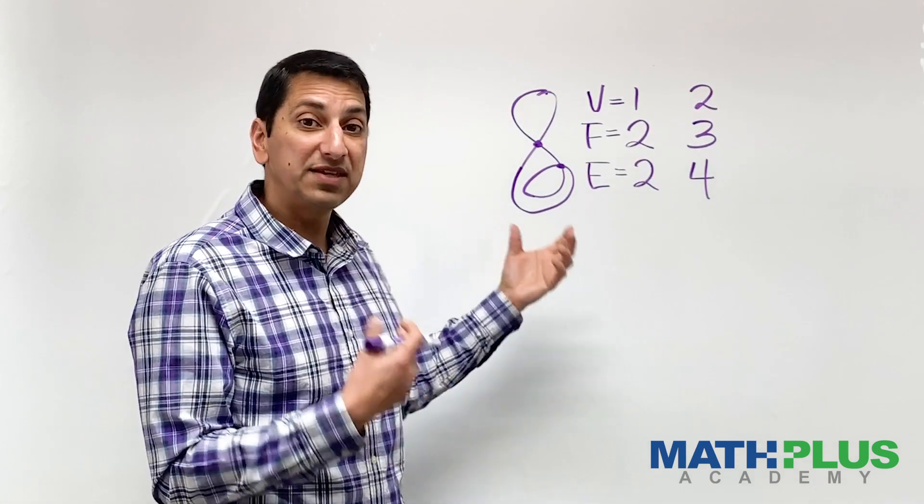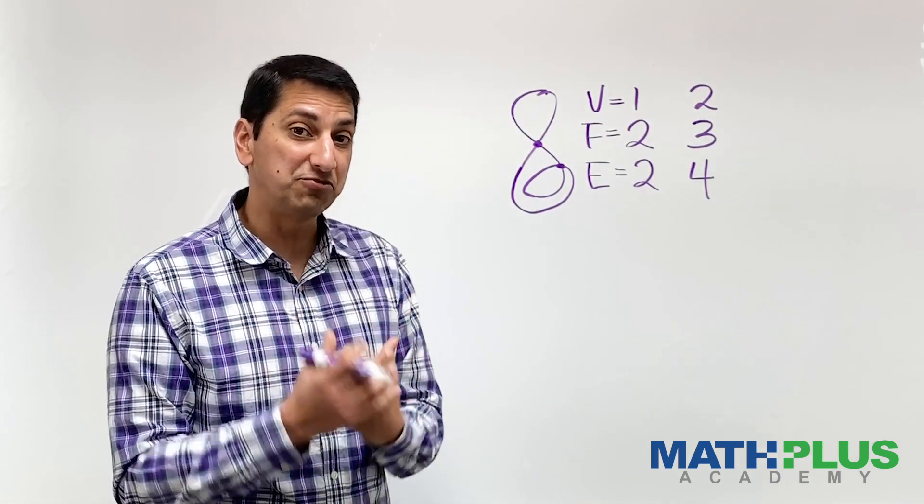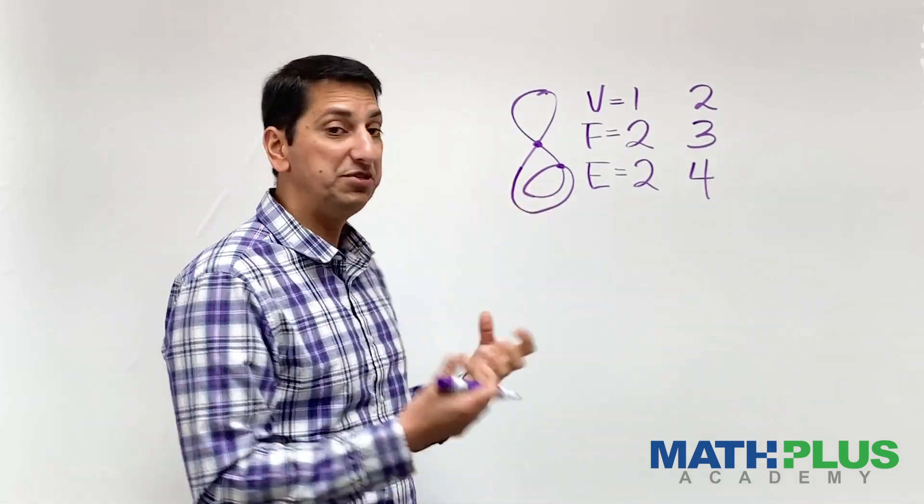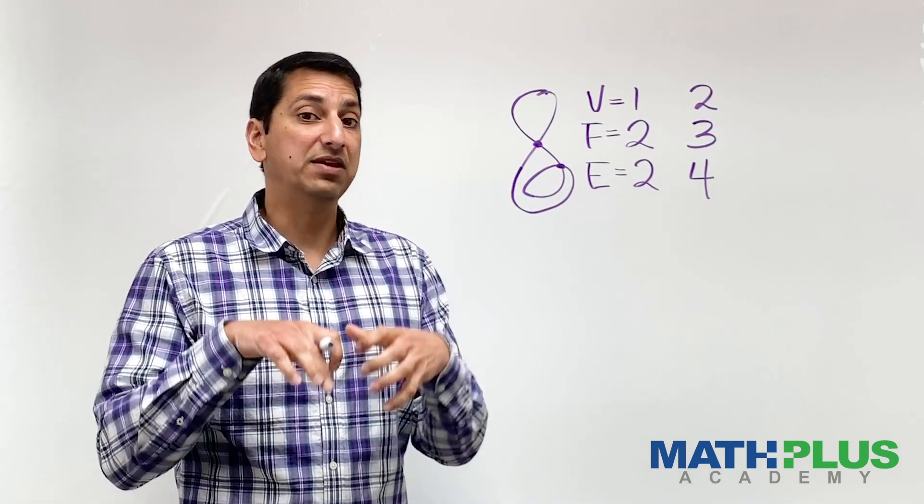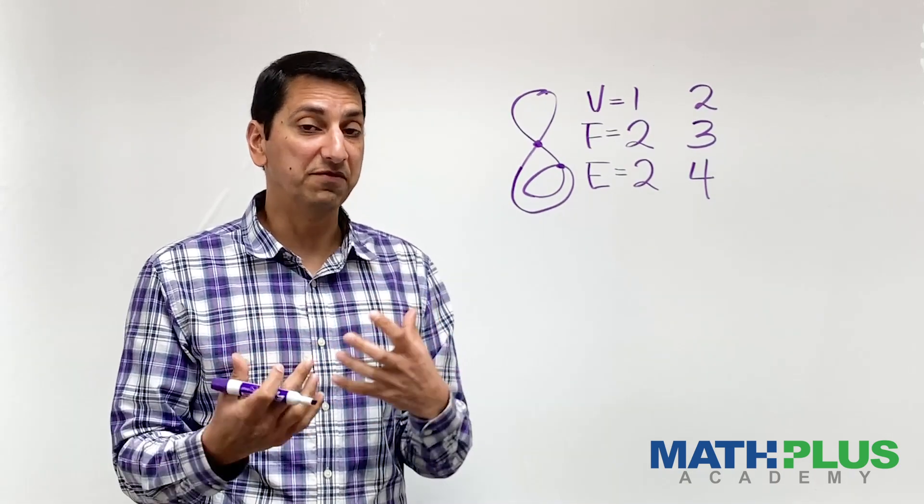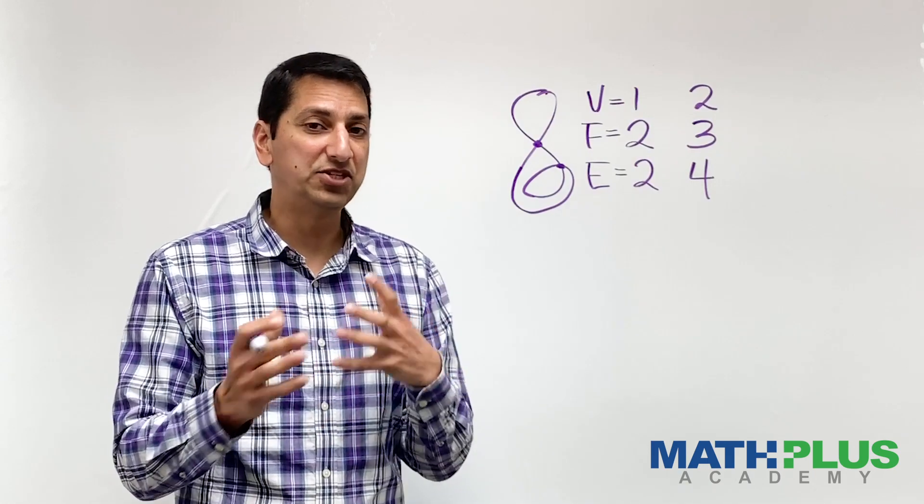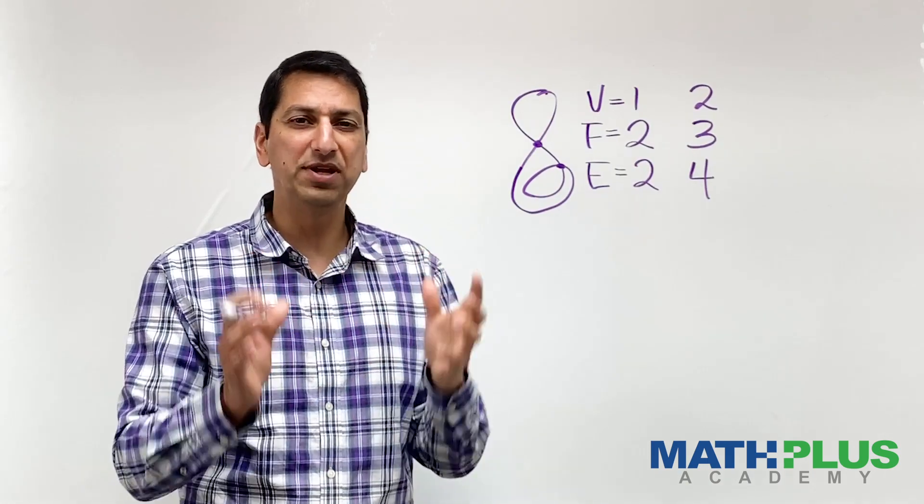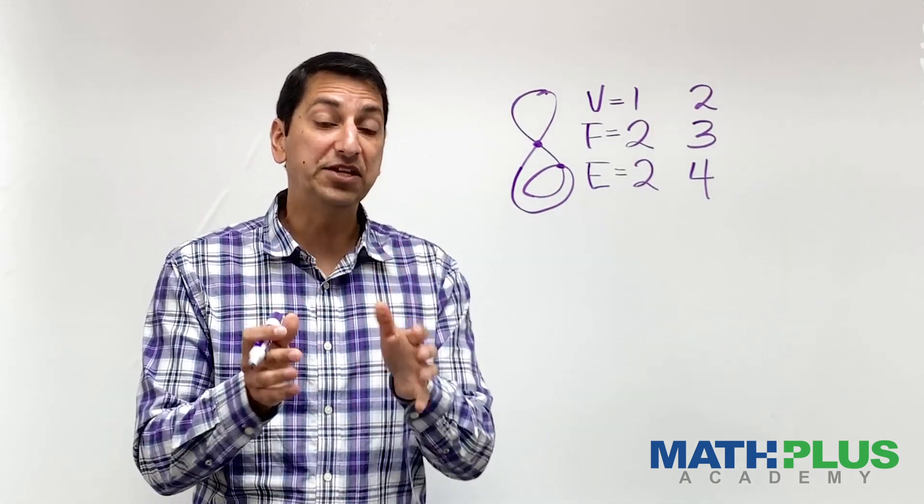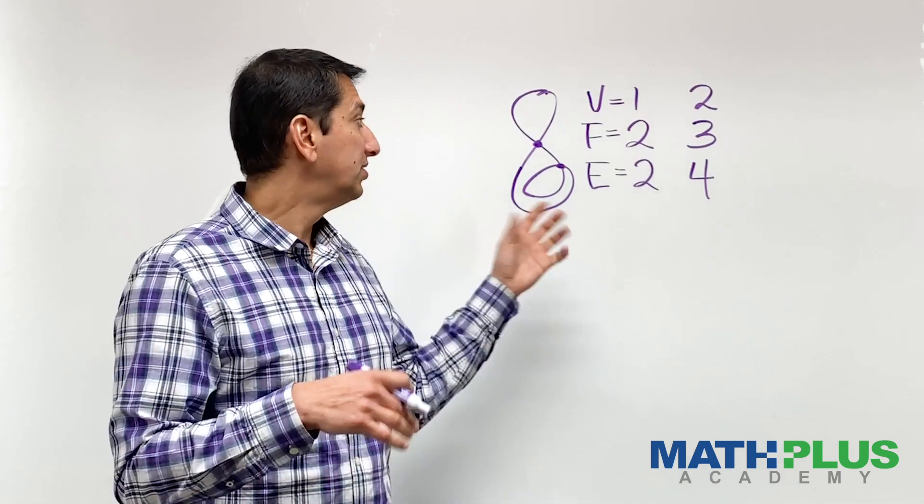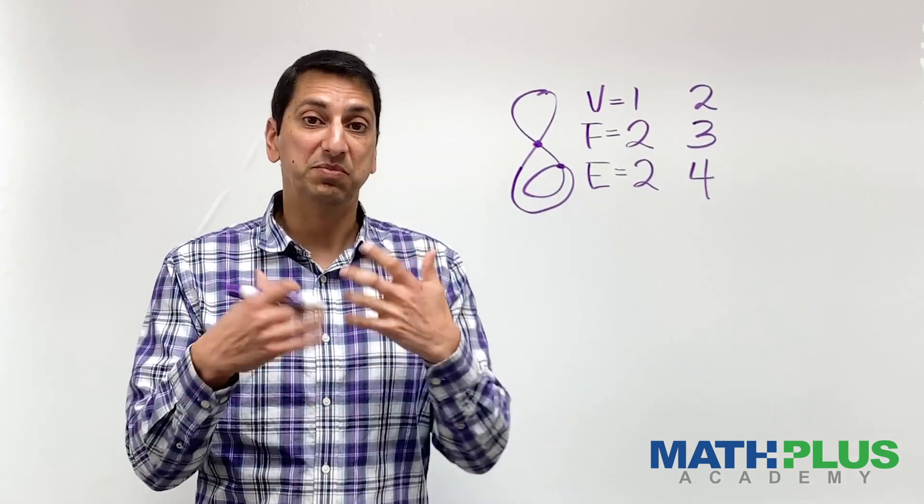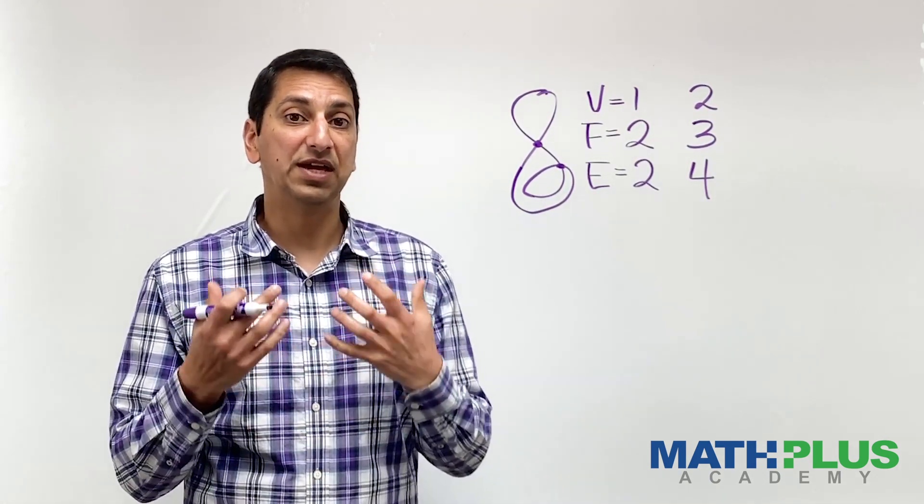So maybe this is helping you start to see the structure of what happens when you add a vertex and change the number of edges and faces. How do they change together? Is there some coordinated way in which that happens? So that's your hint. Keep going. Start making some simple pictures. Build up to some more complicated ones and see what happens.